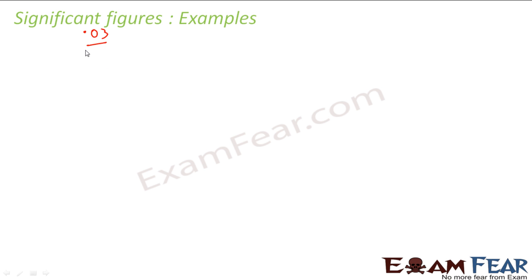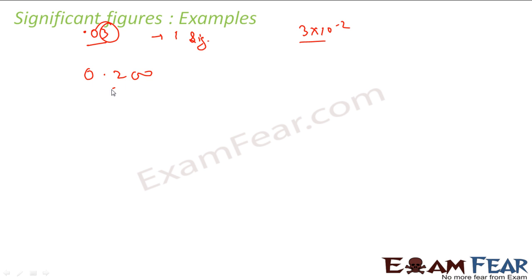Let's take some examples. The number 0.03 has one significant figure because it can be written as 3 × 10⁻². This has only one significant figure. For 0.200, this has 3 significant figures. If it were 0.2, it would have 1; if 0.20, it would have 2; if 0.200, it has 3 significant figures.